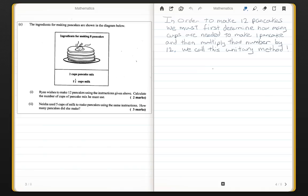In this question, we are given the ingredients needed to make 8 pancakes using 2 cups of pancake mix and 1 and 1 third cups of milk. Right away, I can see that we're going to have to use a technique called Unitary Method. Basically, in order to find the ingredients for 12 pancakes, we should first find the ingredients needed to make 1 pancake and then multiply the numbers by 12. That will give us our answer.